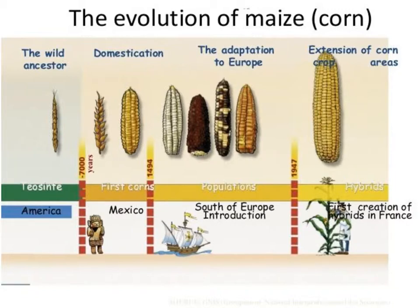Humans have done something similar when we look at dogs. Dogs began as a wolf-like ancestor, and we have bred them for selected traits that we want. Now we have breeds from a Chihuahua to a Great Dane, each very unique and different with a set of characteristics that we have chosen for.